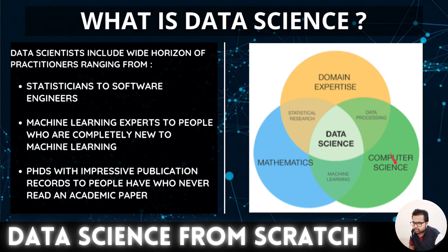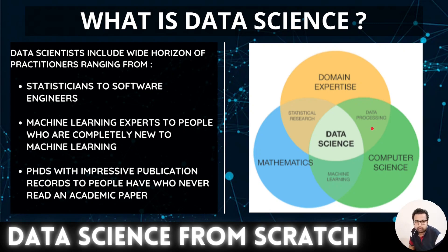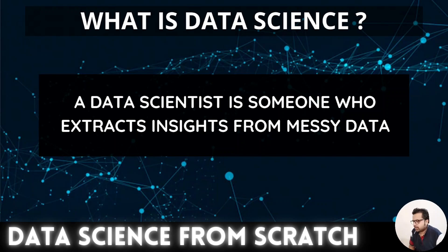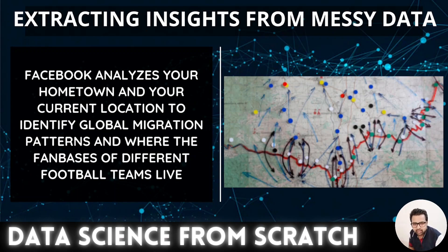The intersection of computer science and domain expertise gives us data processing. Computer science combined with mathematics gives us machine learning — which is all about mathematics plus computation. Mathematics combined with domain expertise gives us statistical research. A data scientist is someone who extracts insights from messy data — we can now easily relate to what that means.